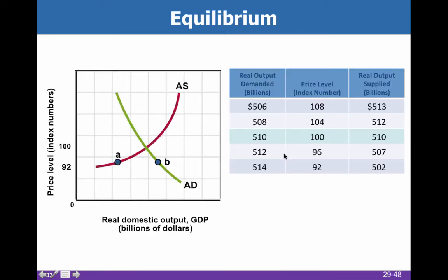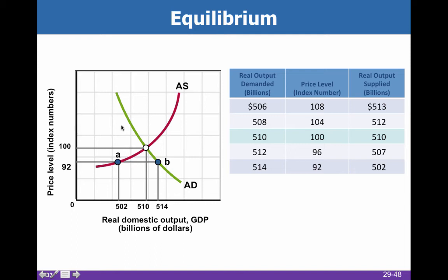Just as you'd expect in supply and demand, there's going to be an equilibrium. At a given price level, if aggregate supply is below aggregate demand there will be a shortage, so the price level rises, quantity adjusts, and we reach equilibrium. Remember that the price level is always an index — not dollar amounts like $92 or $100 in isolation, but index values where $100 is the base year, $92 would be deflation, and $110 would be inflation.